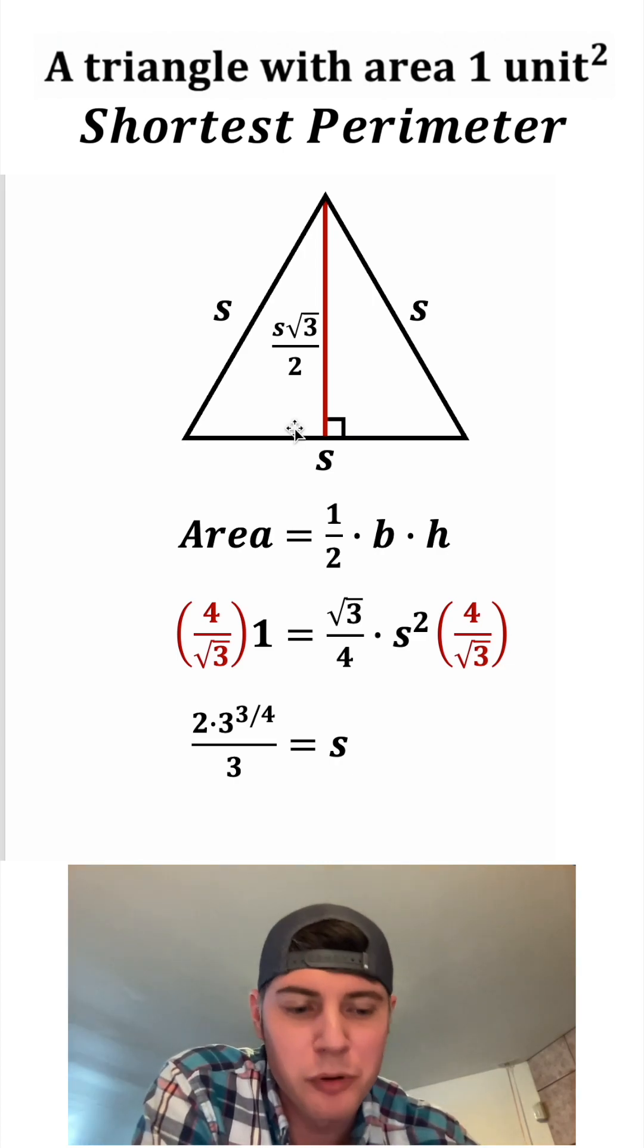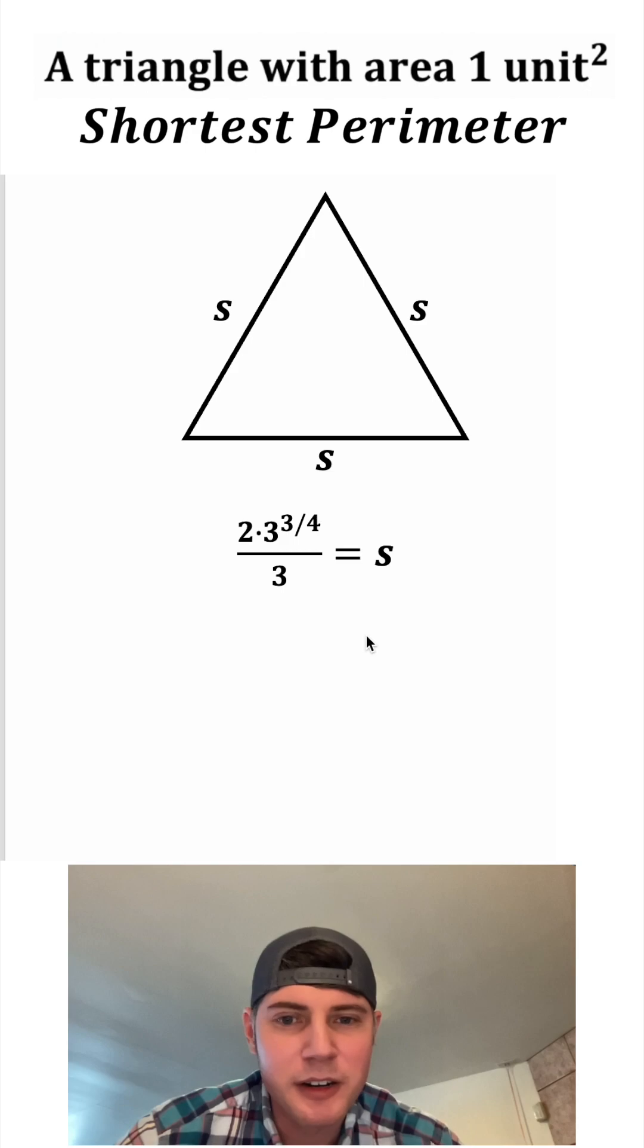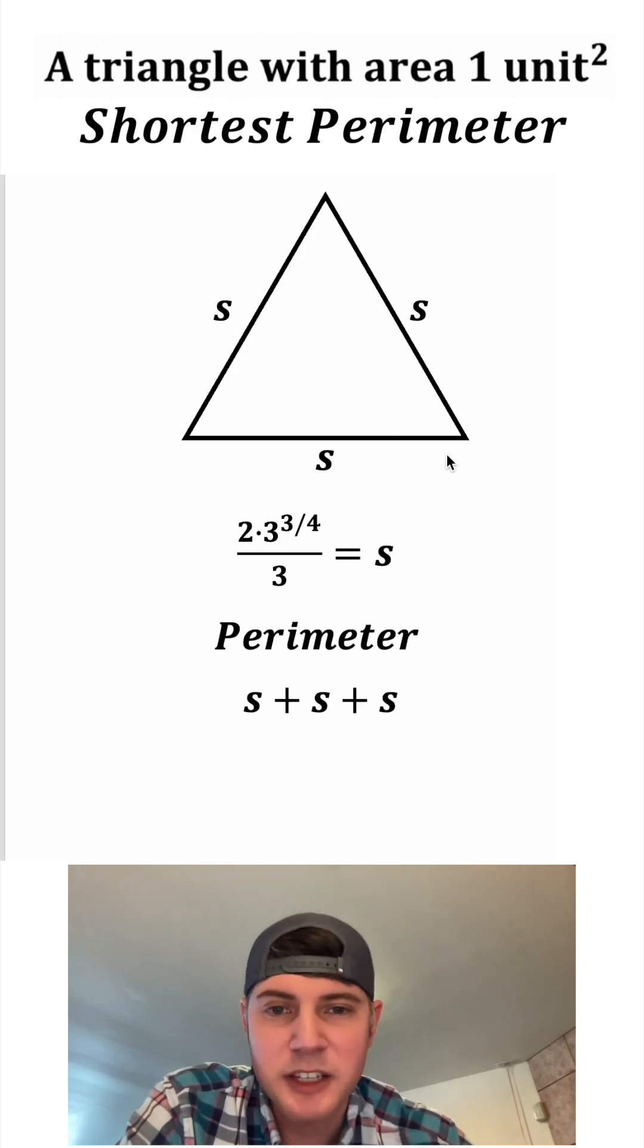But we want to know what is the perimeter. So let's clean all this stuff up and bring this up here. The perimeter of this is going to be equal to S plus S plus S, or in other words, three S.